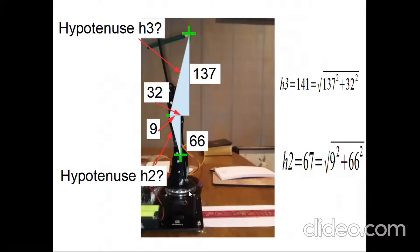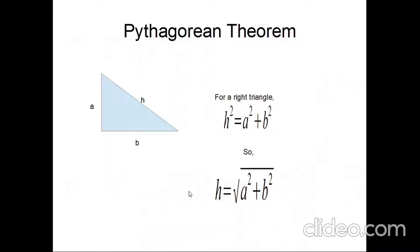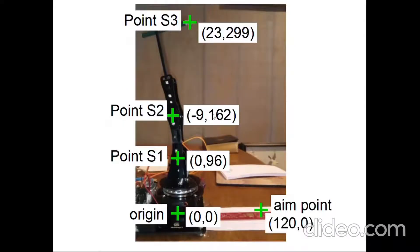I should back up and explain. Ideally, with this robotic arm, each linkage in its neutral position would be straight vertical — I would want point S2 to be directly over S1, but it's not. In reality it's about 9 millimeters to the left of it. And then for the point at the top, it's 23 millimeters to the right. So I need to figure out what angles they're actually at since they're not directly stacked on top of each other.